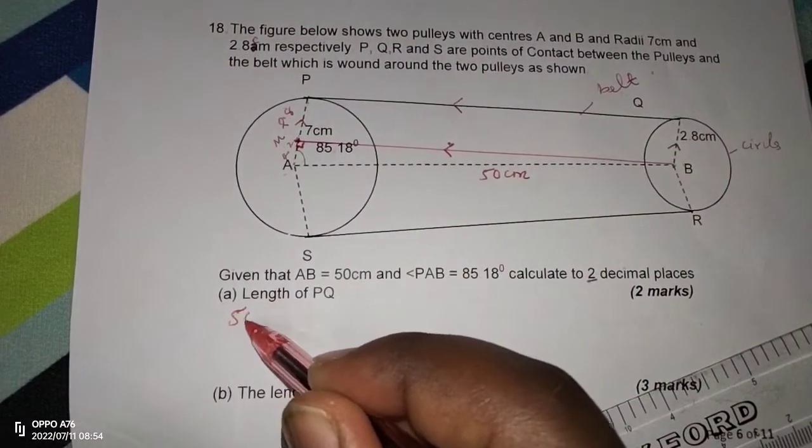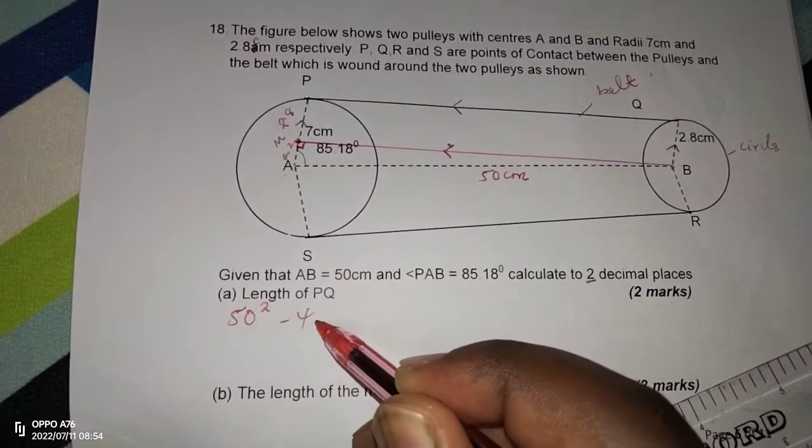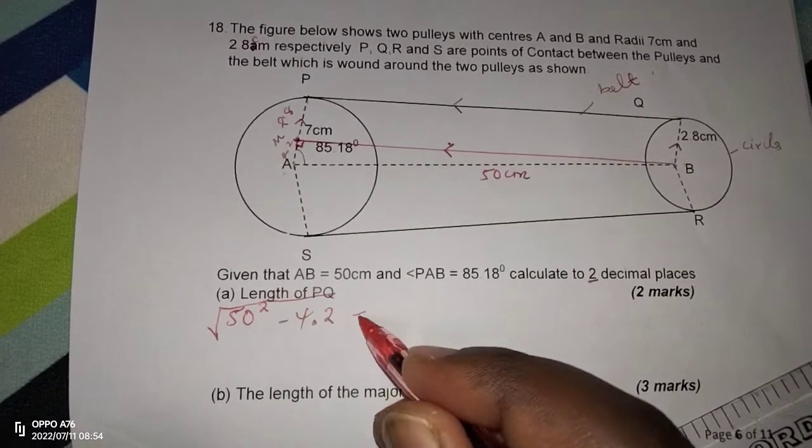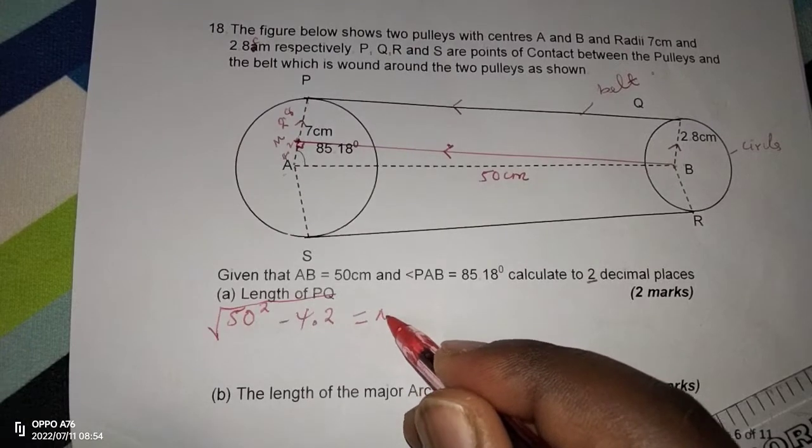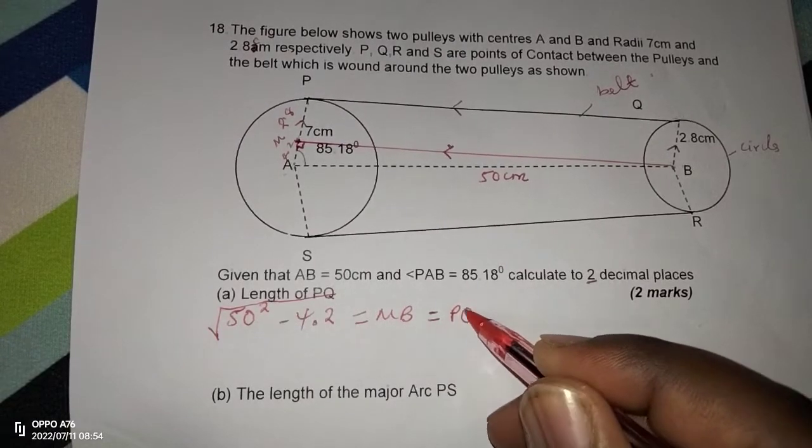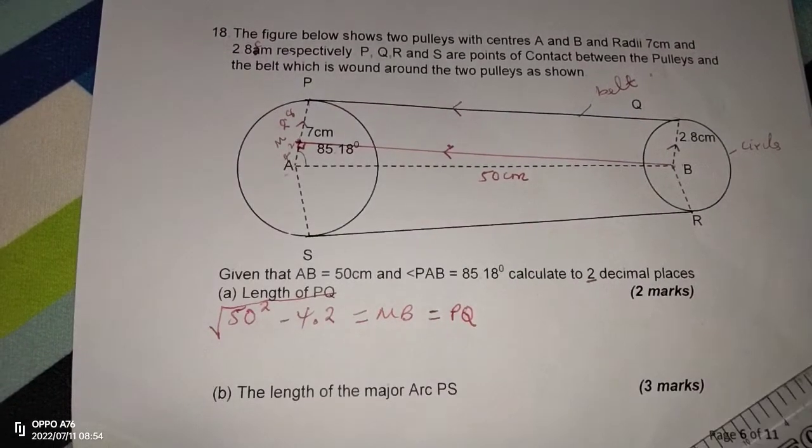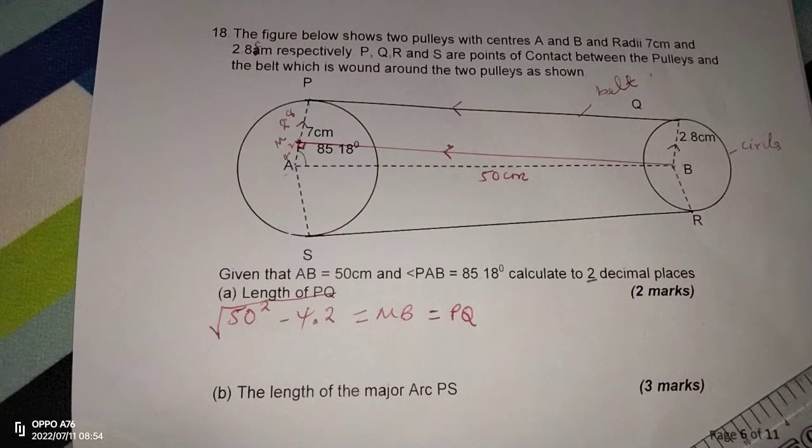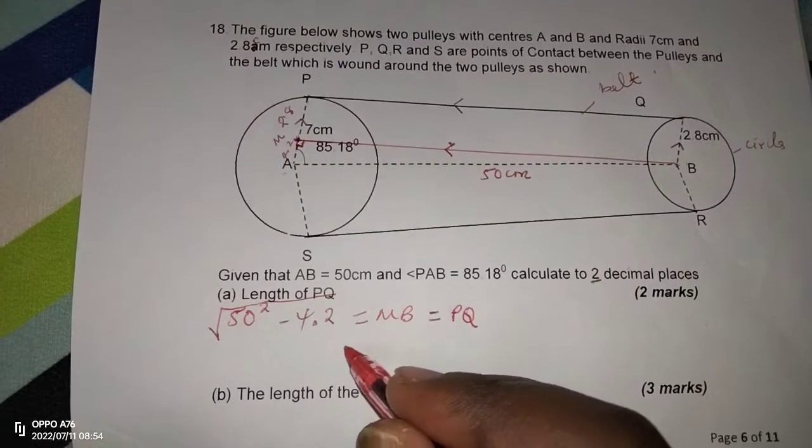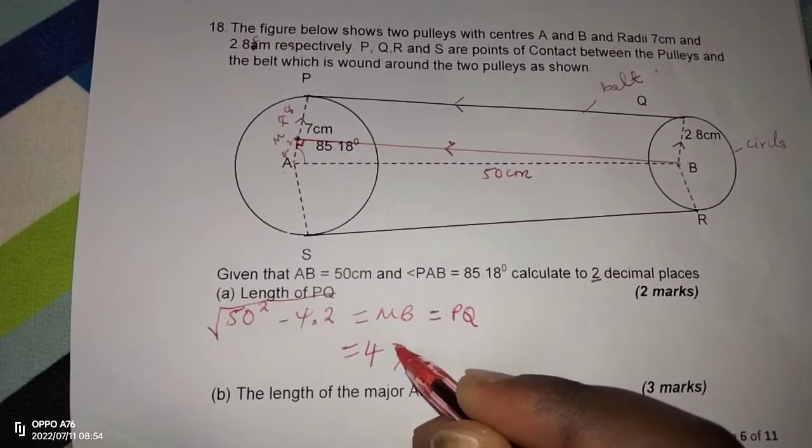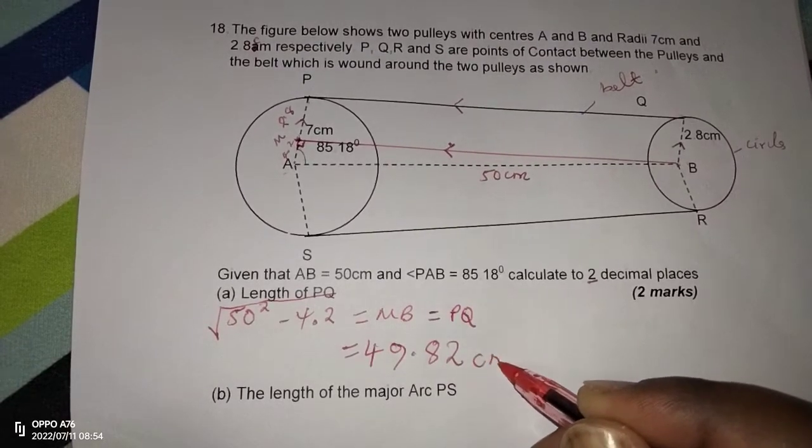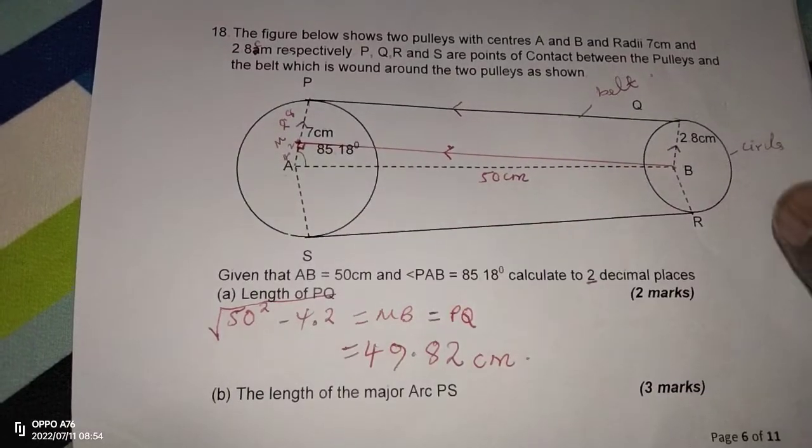And for this matter, we'll say 50 squared minus 4.2 squared. When we obtain the square root, this will give us the length MB, which at the same time is equal to PQ. So we will have calculated PQ. So let's get 50 squared and we obtain the square root. 49.82, according to the accuracy we've been taught to operate with, of two decimal places. These are centimeters. So that is the length of PQ.